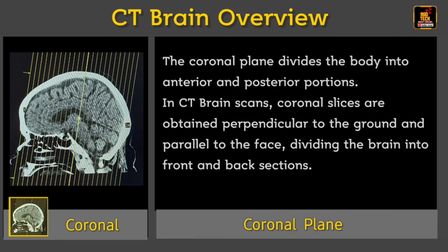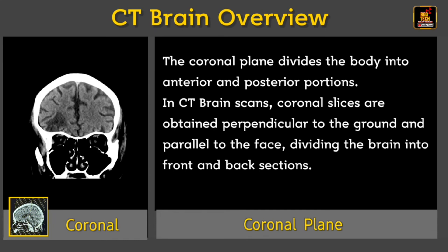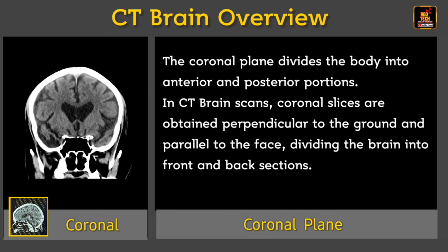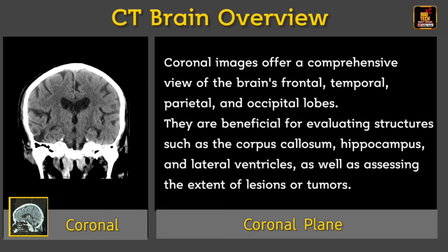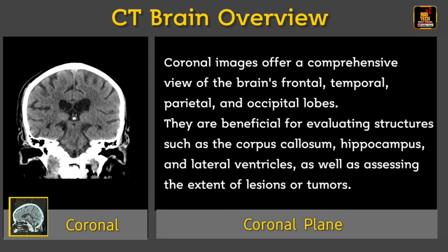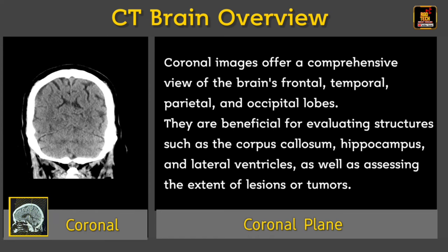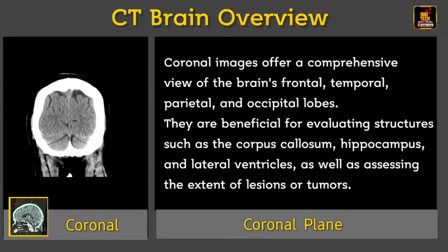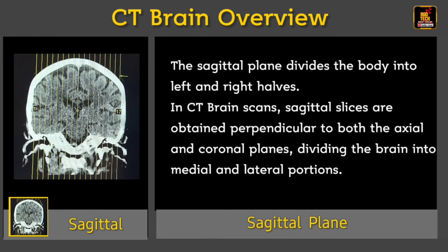Axial images are particularly useful for assessing lesions, hemorrhages, infarctions, and other abnormalities in the brain. The coronal plane divides the body into anterior and posterior portions. In CT brain scans, coronal slices are obtained perpendicular to the ground and parallel to the face, dividing the brain into front and back sections. Coronal images offer a comprehensive view of the brain's frontal, temporal, parietal, and occipital lobes, and are beneficial for evaluating structures such as the corpus callosum, hippocampus, and lateral ventricles, as well as assessing the extent of lesions or tumors.